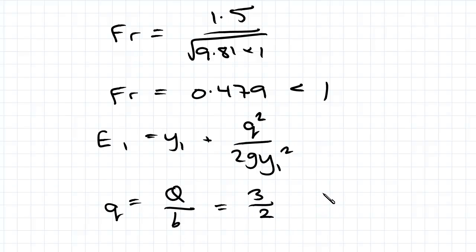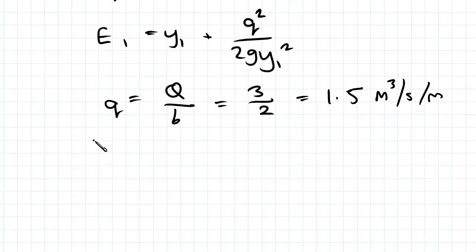So our width of the flow was 2 meters we said and that's 1.5 meters cubed per second per meter. Subbing all that in we get e1 equal to 1 plus 1.5 squared.